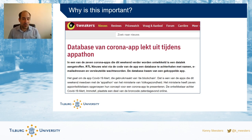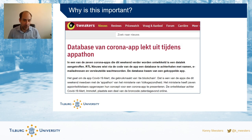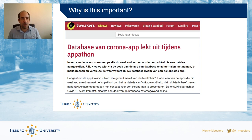An example of this sudden shift and the risks it brings is the corona apps being developed here in the Netherlands. The apps being developed were asked to put their source code online, and in one of those source codes people found a database with stored names and some personal information — it contained email addresses and encrypted passwords. So it shows that rapid IT development can present certain risks.